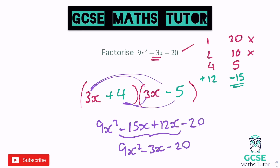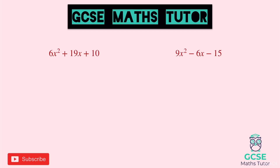And that is factorising a quadratic where the coefficient is bigger than 1, and we have different options for the numbers that can go in the brackets. Here are two more for you to have a go at — pause the video and we'll go over the answers in a second.